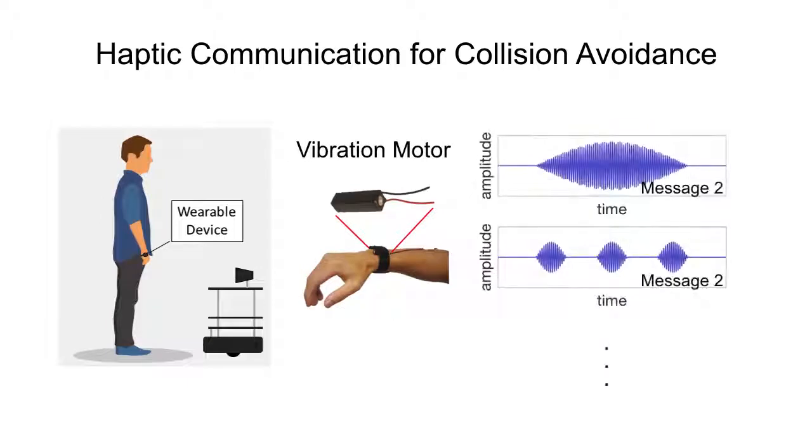The haptic interface displays different vibrational patterns to indicate the robot's intent. A single long vibration signal warns the user that the robot wants to pass first, while a series of short light pauses indicates that the robot wants to yield and let the human pass first.